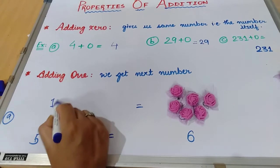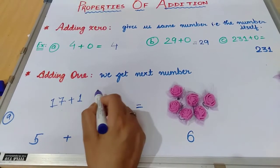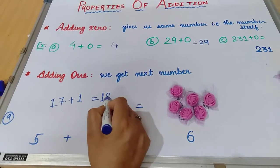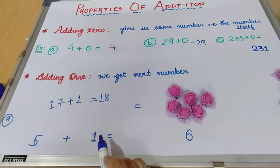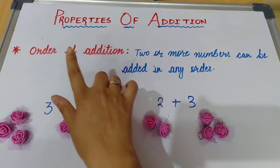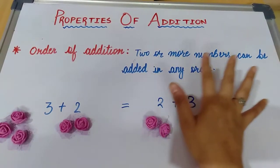If you add one to seventeen, what is the next number after seventeen? Very good, eighteen. So you will get the next number. This is our second property. So our next property is order of addition.